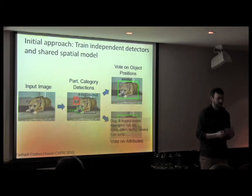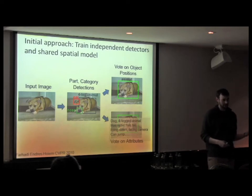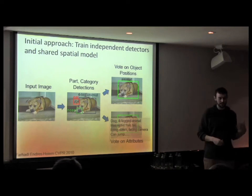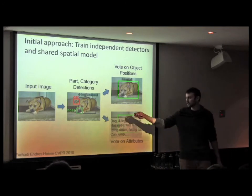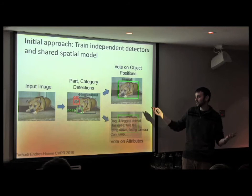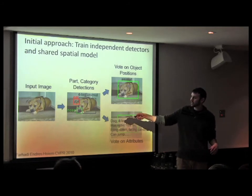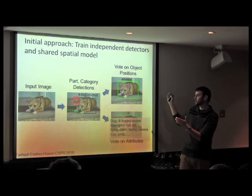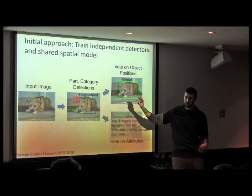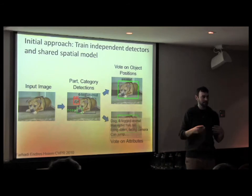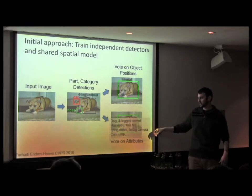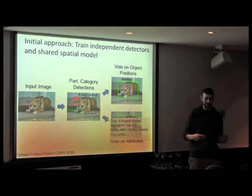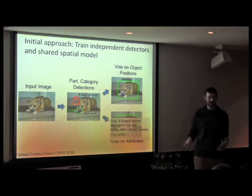The initial approach is to train separate detectors — a separate leg, head, and four-legged animal detector — run those detectors over images, and also train a spatial model that allows those detectors to predict the whole object location. We get a bunch of detections for possible part and object locations, and these vote on the location of the whole object. Then given the different part detections and their locations, all these detections vote on what the attributes of this particular object are — predicting that it's a four-legged animal, has a nose, faces the camera, and can jump.